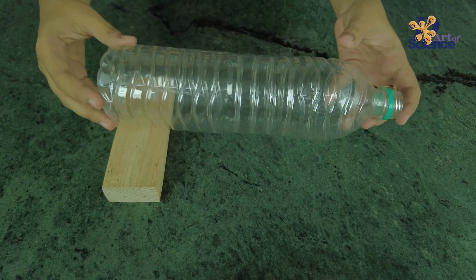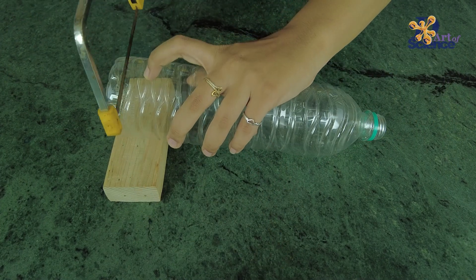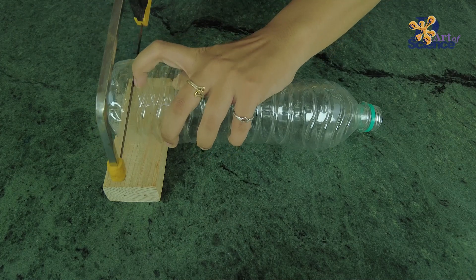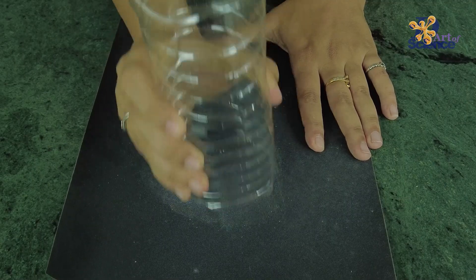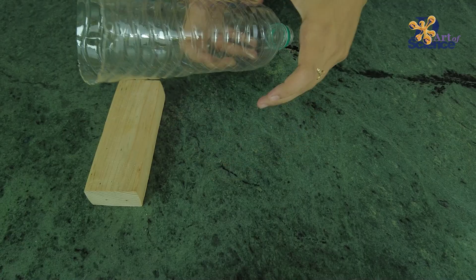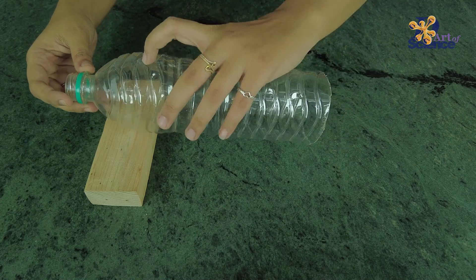To set up this experiment, take a plastic bottle and use a hacksaw to cut off the bottom. Then use sandpaper to smoothen the edges. Repeat the same for the top as well to get a cylinder.